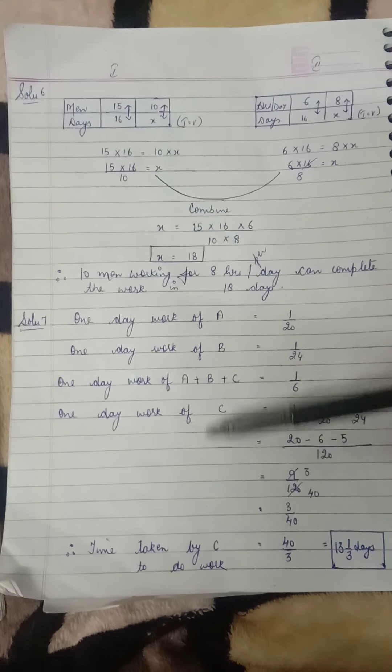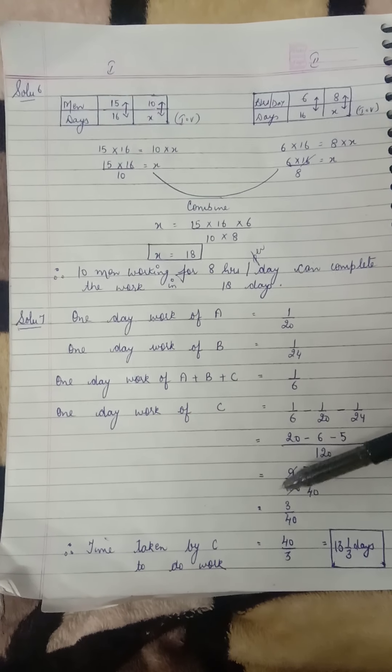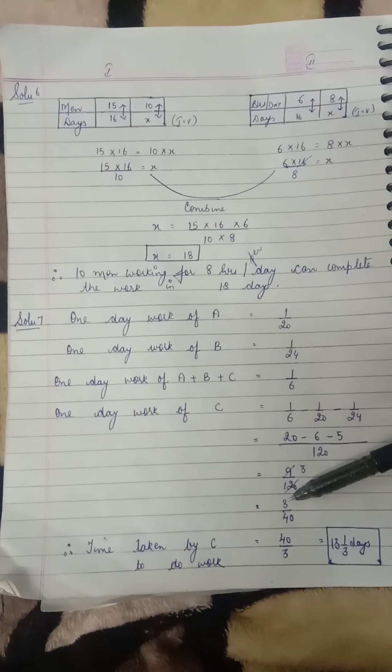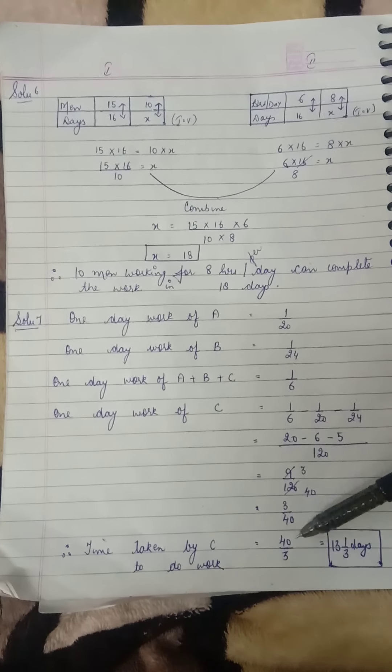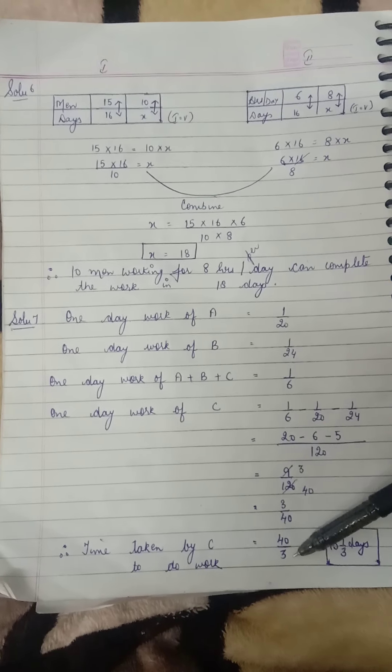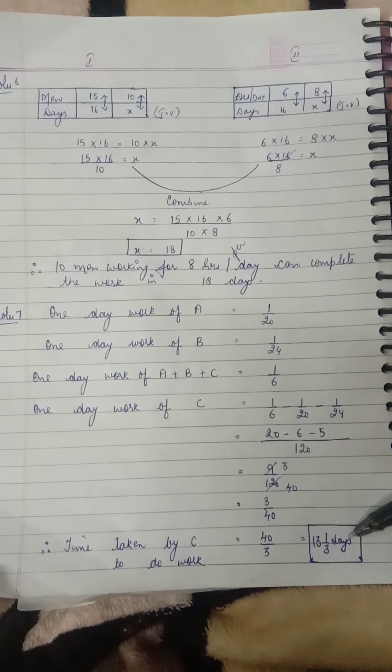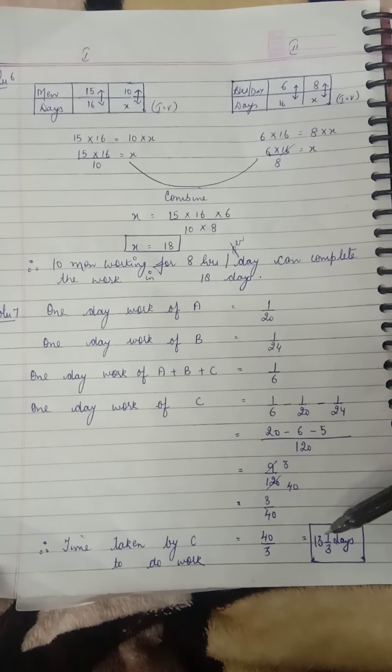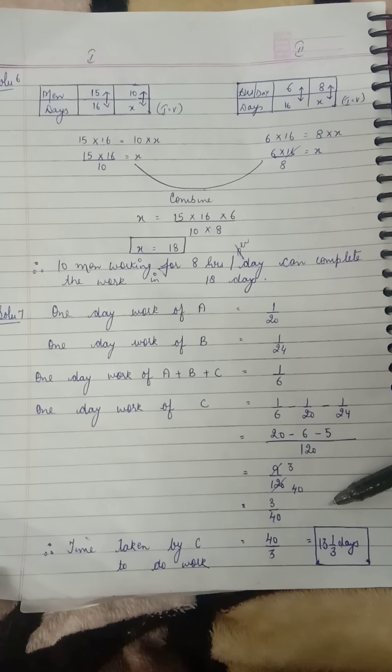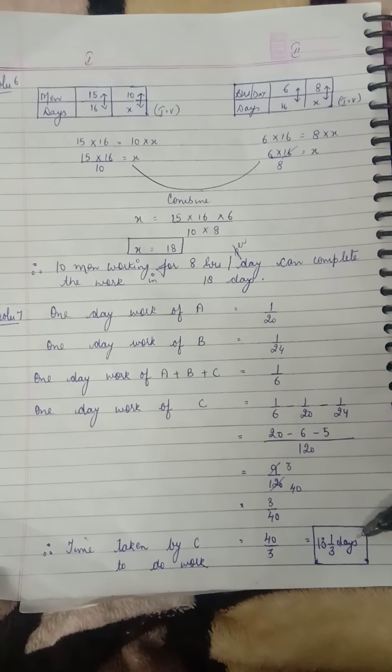On reducing to lowest terms, that's 3 upon 40. That's the one day work of C. Therefore the time taken by C will be the reciprocal of one day work, so reciprocal of 3/40 will be 40/3. Converting to a mixed fraction, that is 13 and 1/3 days.